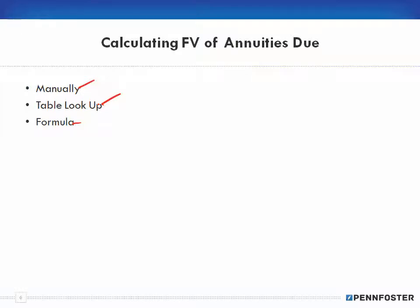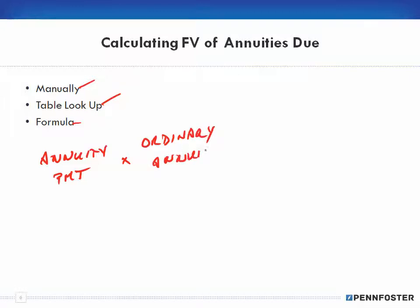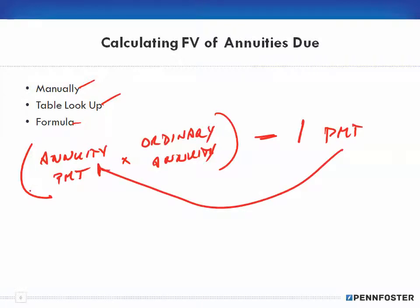To calculate the future value of an annuity due, we take the annuity payment and multiply it by the ordinary annuity factor — we look up the factor almost the same way as with an ordinary annuity. But whatever answer we get, we then have to subtract out one payment.